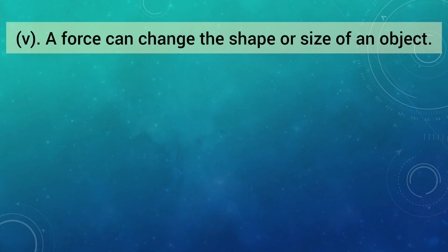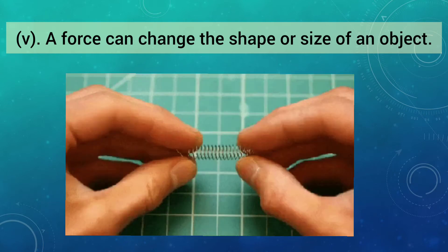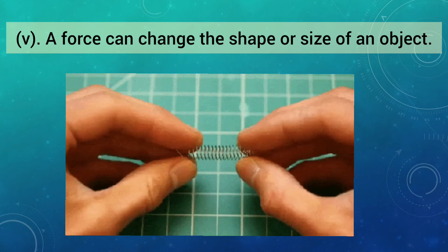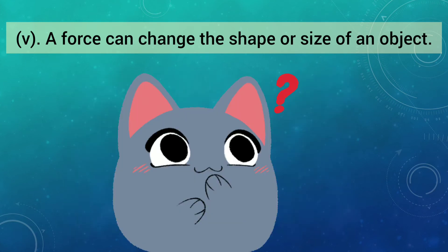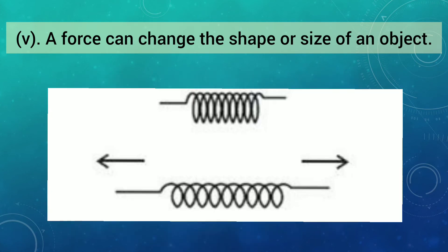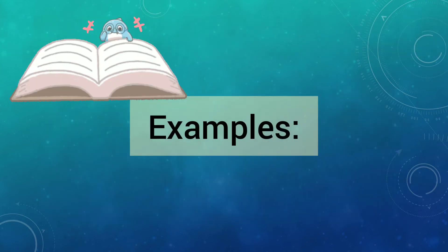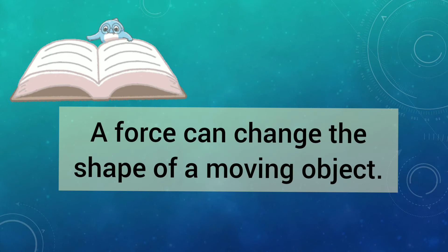A force can change the shape and size of an object. Students, look at this spring. If we pull it at both ends with our hands, the shape and size of the spring changes. Because the force of our hands changes the shape and size of this spring. The turns of the spring become farther apart and its length increases. Now let us see some more examples in which a force changes the shape of an object.